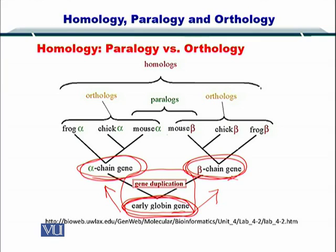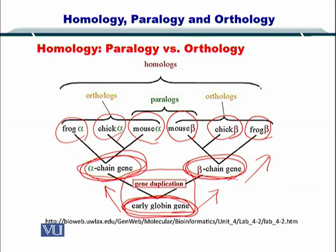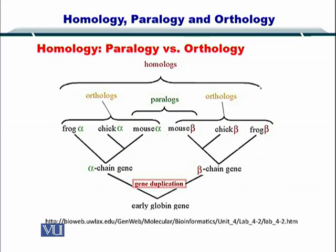So this beta chain gene can be found in frog, in chick, and in mouse. Similarly, the alpha chain gene can be found in mouse, chick, and frog as well. Now, if you look carefully, the same alpha and beta gene has now been found in mouse — the same species. So the mouse has both the alpha and beta gene. When both of these genes are translated into proteins, two proteins will result which are essentially coming from the same ancestral gene. So this is called two paralogues.